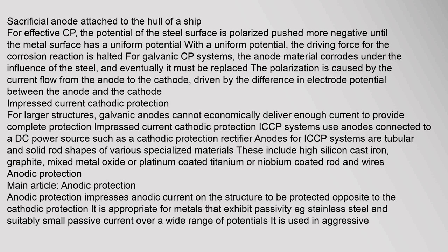Impressed current cathodic protection. For larger structures, galvanic anodes cannot economically deliver enough current to provide complete protection. Impressed current cathodic protection (ICCP) systems use anodes connected to a DC power source such as a cathodic protection rectifier. Anodes for ICCP systems are tubular and solid rod shapes of various specialized materials, including high-silicon cast iron, graphite, mixed metal oxide, or platinum-coated titanium or niobium-coated rod and wires.